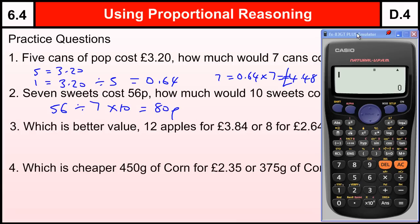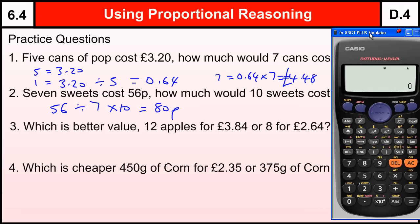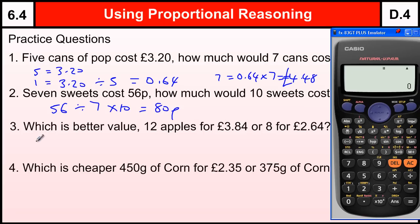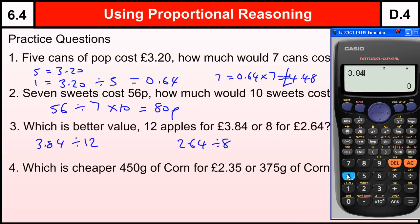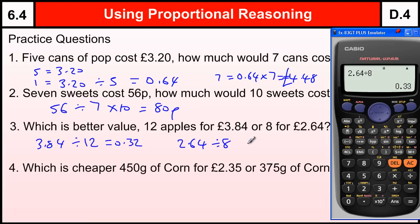Which is better value: 12 apples for £3.84, or eight apples for £2.64? We've got £3.84 divided by 12, and £2.64 divided by eight. 3.84 ÷ 12 = £0.32, so 32p each. And 2.64 ÷ 8 = 33p each. So 12 apples is better value.